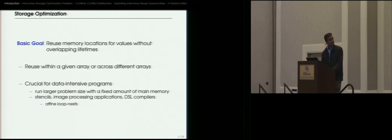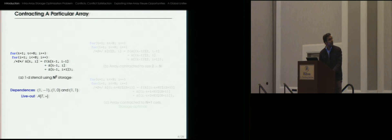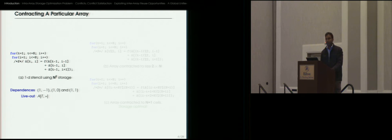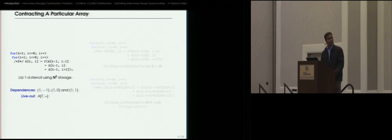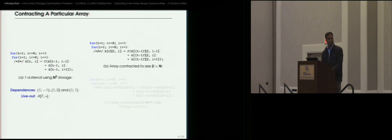Let's look at a couple of examples to understand the problem better. Here's a time-iterated 1D stencil, which has been implemented to use n-square storage. A[t][i] depends on A[t-1][i+1], A[t-1][i], and A[t-1][i-1], giving us dependence vectors (1,-1), (1,0), and (1,1). The live out is basically the final row of the array that is computed. Because every row is computed as a function of the previous row, an obvious way to contract this array is to reduce it to just two rows of size n each, using a modulo 2 access on every array access.